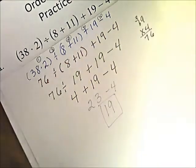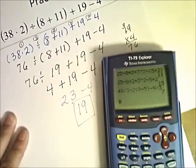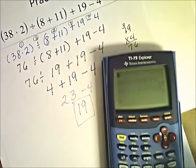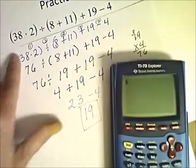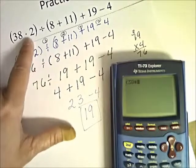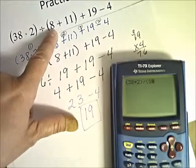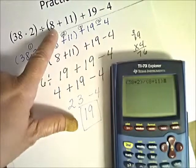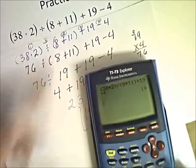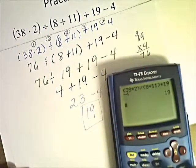We did one step at a time. Let's check this problem using the calculator, which correctly does order of operations. We're going to enter it with parentheses: parenthesis 38 times 2, parenthesis, divide by parenthesis 8 plus 11, parenthesis, plus 19 minus 4, equals — and we got our answer of 19, so we did that problem correctly. Long problem there with 5 steps.